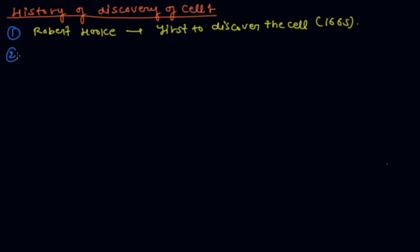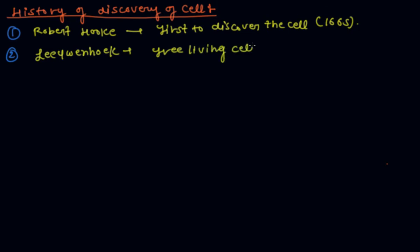The second is Leeuwenhoek. Leeuwenhoek was the first to discover free-living cells in pond water, in 1674.